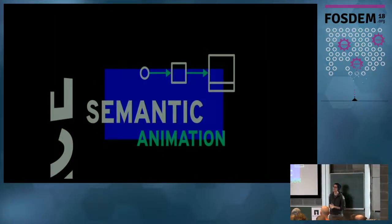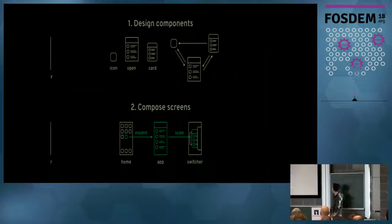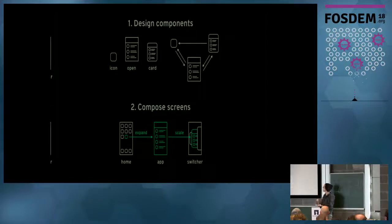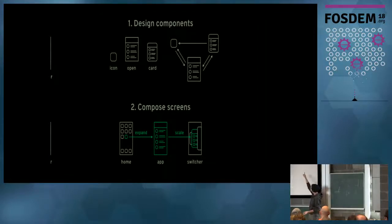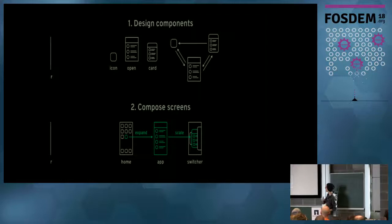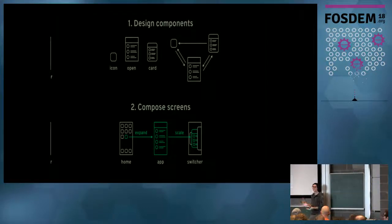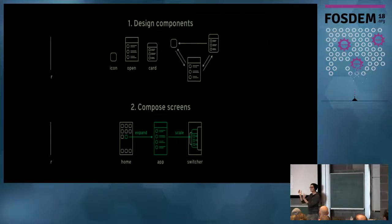This new approach is semantic animation. Instead of thinking about screens as units first, you think about what's on the screens first — semantic components that have a meaning and that have states. In this case, we have an app component that's either an icon, an open app, or a card. Those are the three states. Then we have a bunch of transitions — five transitions that we need to handle. When we actually get to the physical rectangles on the user's device, it's obvious what the animations are going to be. The icon is the same thing as the full screen app, so it just expands. The whole home screen doesn't have to zoom.